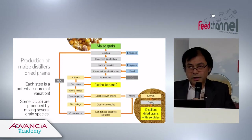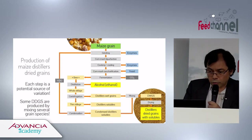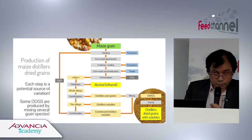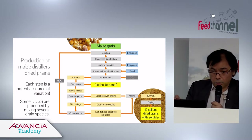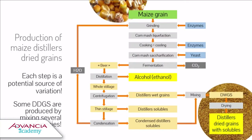For example, if we take the process to make alcohol, there are many steps involved, and each variation of each step will result in a variation of the by-product. At the end, we have a mixture of solubles and wet grains, and the proportion of solubles to wet grains results in different products.